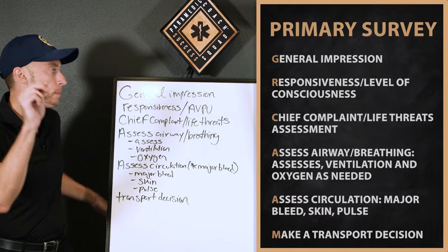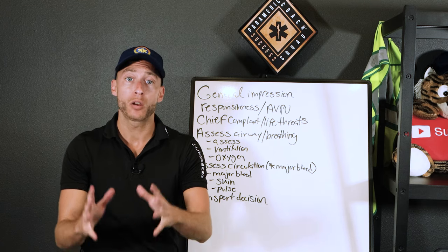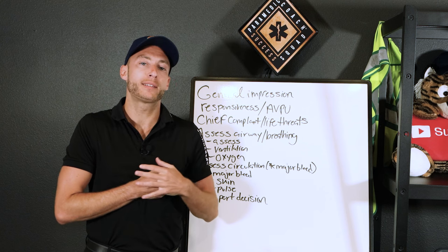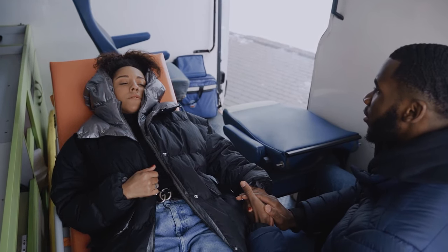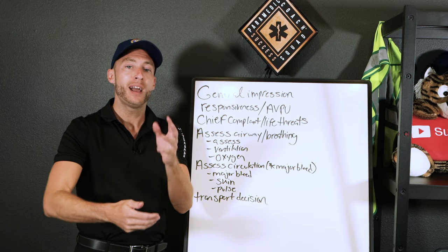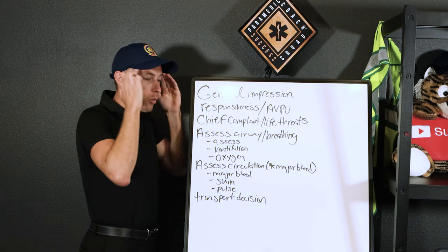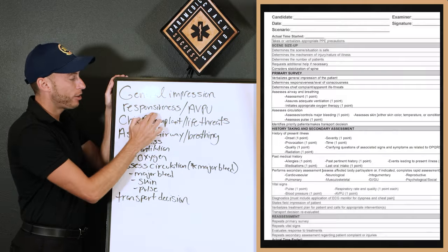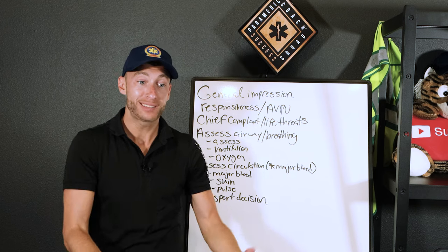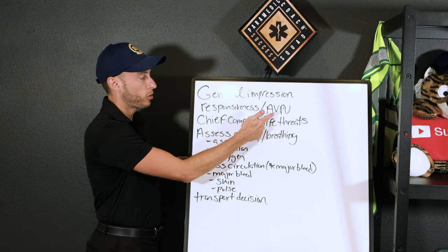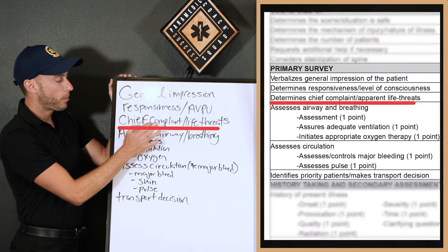With the primary survey we're now in front of the patient gathering our general impression. We approach and say: 'Hey, my name is Evan, I'm a paramedic — what's going on today?' The patient is speaking in two-to-three word sentences, complaining of chest pain, alert and able to speak. We check responsiveness using AVPU — alert, verbal, painful, or unresponsive. This patient is alert. If they're speaking, they have a patent airway.